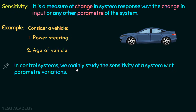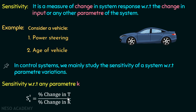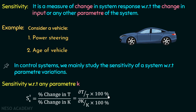In control systems, we mainly study the sensitivity of a system with respect to parameter variations. The sensitivity of T with respect to parameter K is defined as S_T^K, equal to the percentage change in T over the percentage change in K. This simplifies to (K/T) multiplied by (del T / del K), which gives us the sensitivity of T with respect to K.